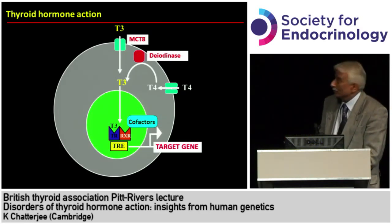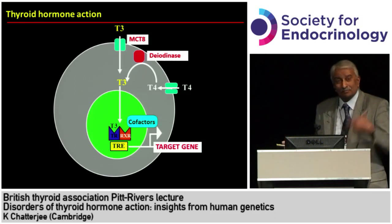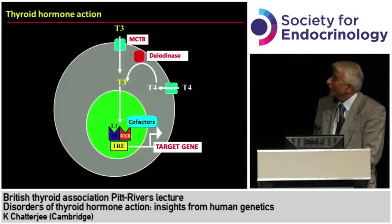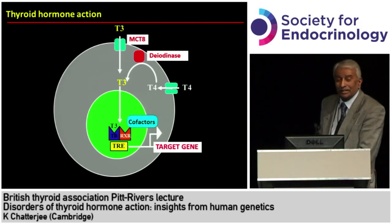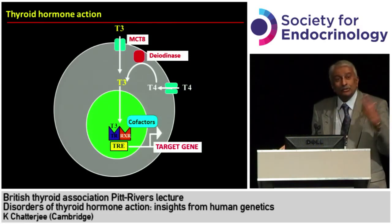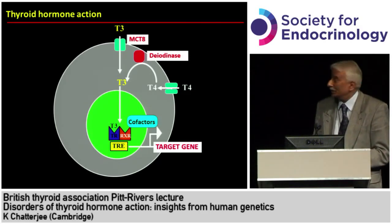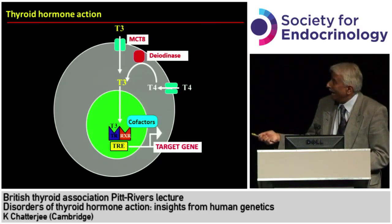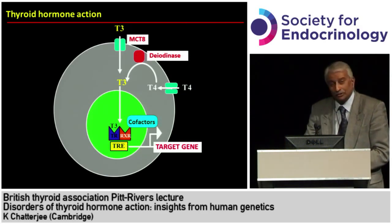As Teo said, we also recognize that, for example, in the central nervous system, a membrane transporter is critical for the entry of thyroid hormone into cells. And intracellularly, these two deiodinase enzymes — type 1 and type 2 — mediate conversion. And then it acts via a nuclear transcription factor, the thyroid receptor.